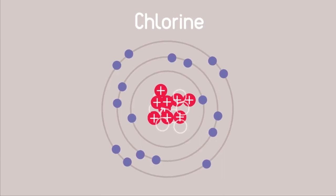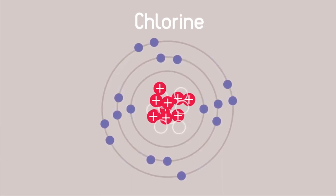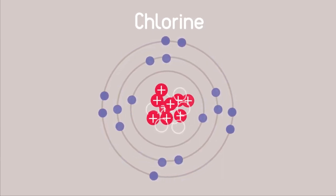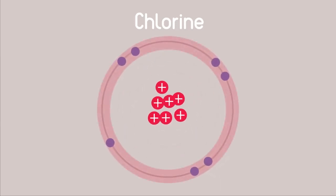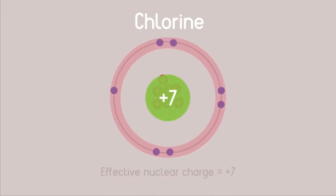Thus, in chlorine, the inner 10 electrons will cancel out or neutralize the effect of 10 of the protons. So the outer 7 electrons feel an effective charge of just 7 plus, holding them in their outer shell.